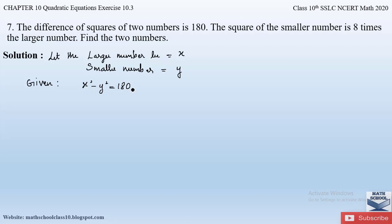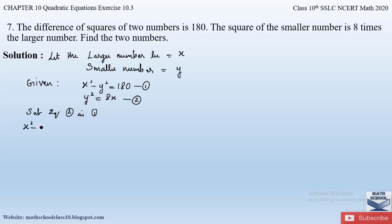Also given: the square of the smaller number is 8 times the larger number. The smaller number is y, so y² = 8x. Let this be equation 2. Now substitute the value of y² = 8x into equation 1: x² − 8x = 180, which gives us x² − 8x − 180 = 0.